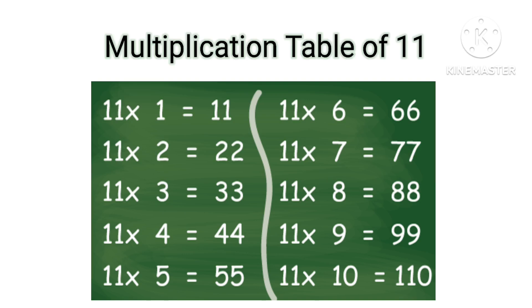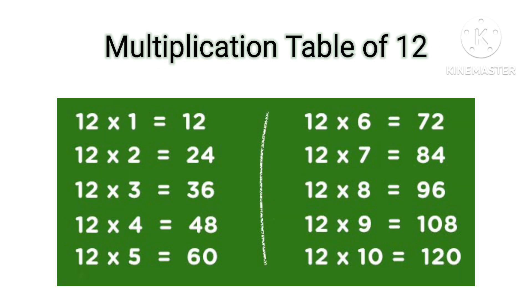Table of 11: 11×1=11, 11×2=22, 11×3=33, 11×4=44, 11×5=55, 11×6=66, 11×7=77, 11×8=88, 11×9=99, 11×10=110.